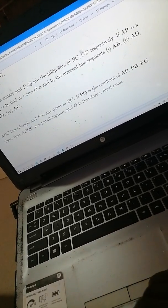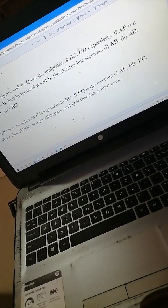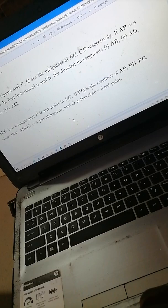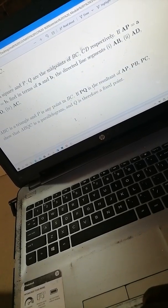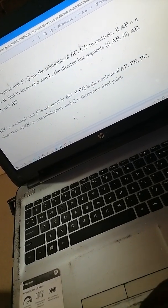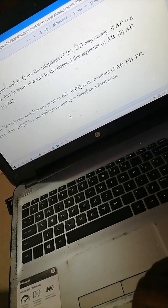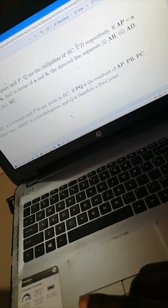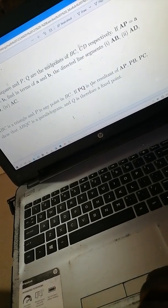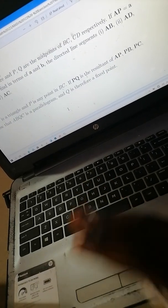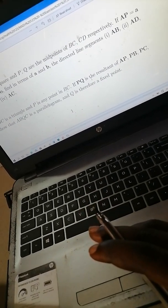Either on the triangle or outside the triangle, you have to figure that one out. Then PQ, they give me another key point that PQ is the resultant of AP, PB, and PC. In other words, the sum, so PQ is just equal to AP plus PB plus PC. That's what the question is saying. Now I want to show that ABQC is a parallelogram. We want to show that the opposite sides are equal.